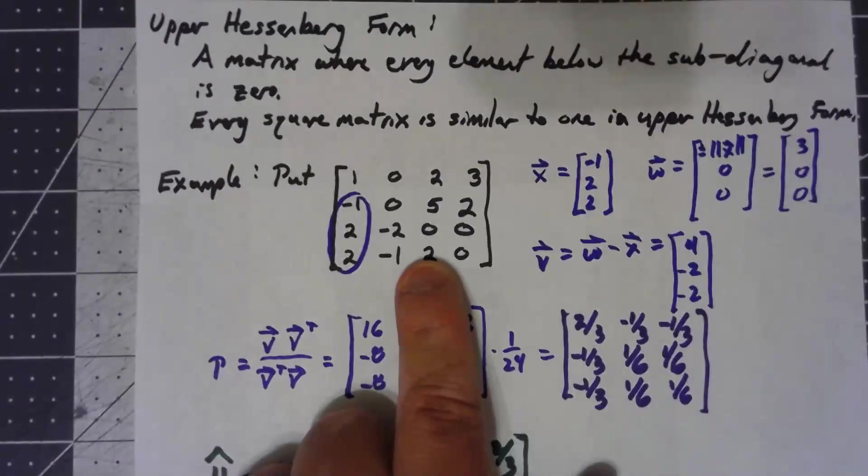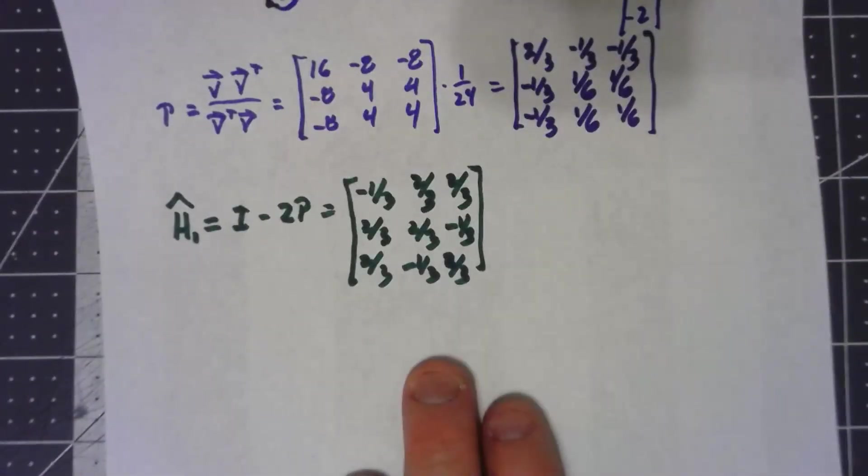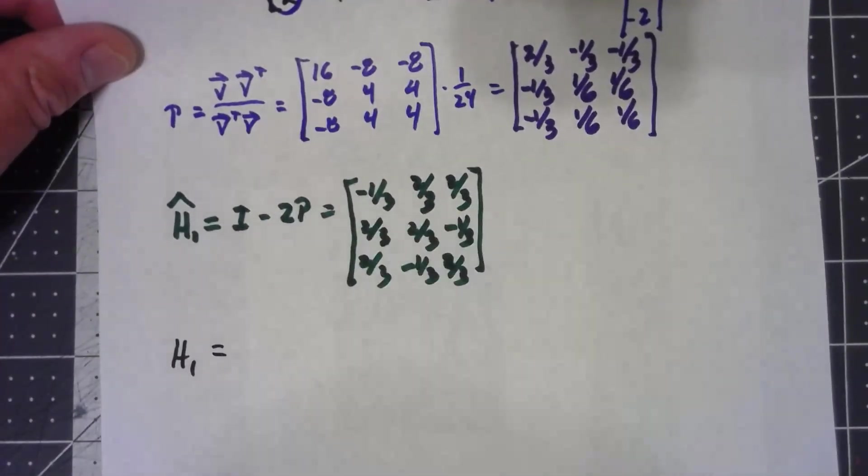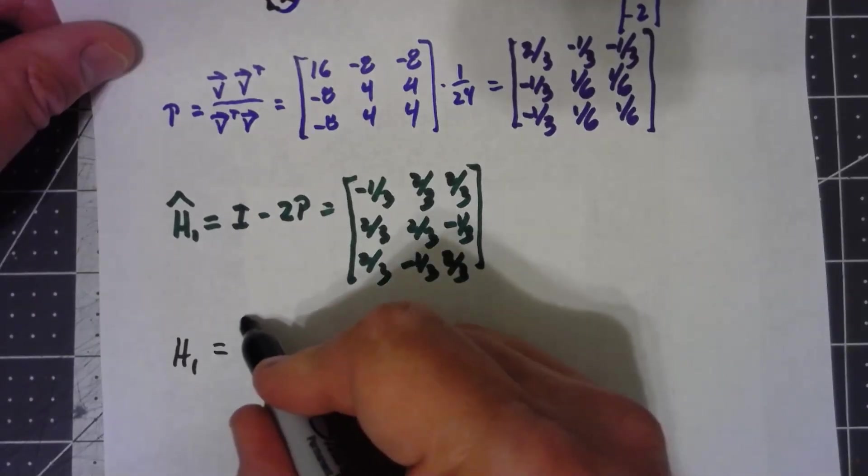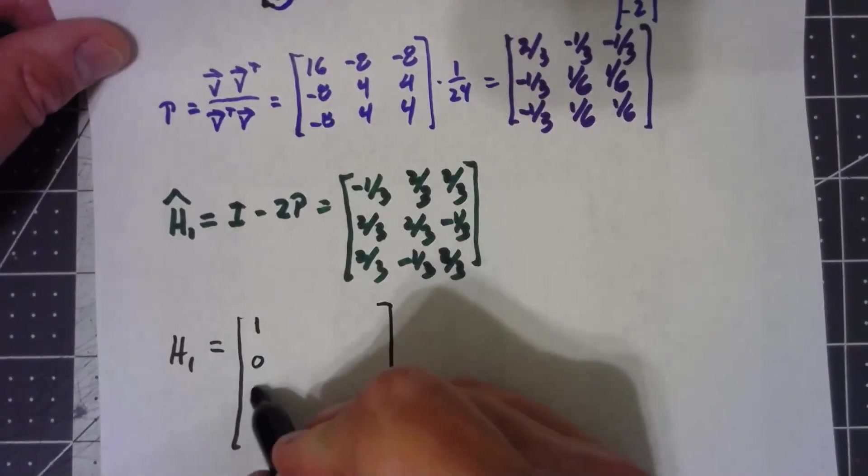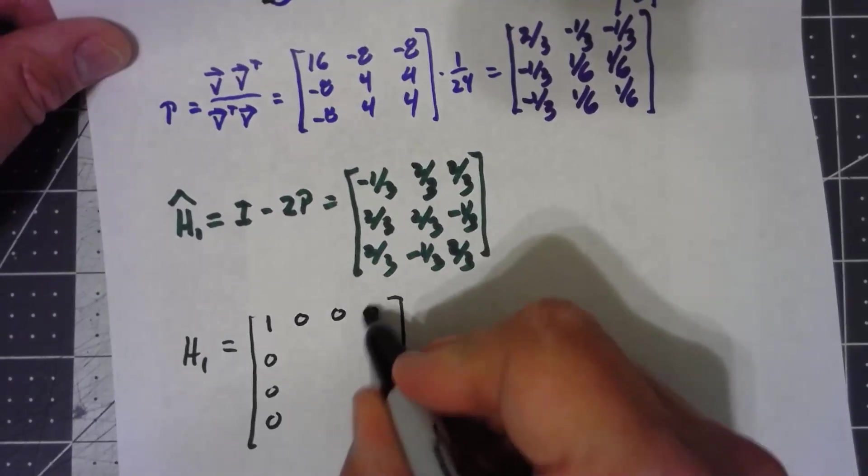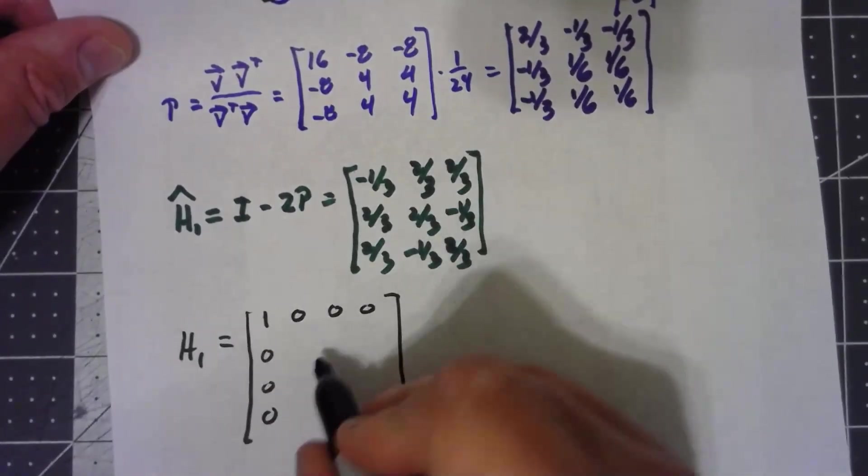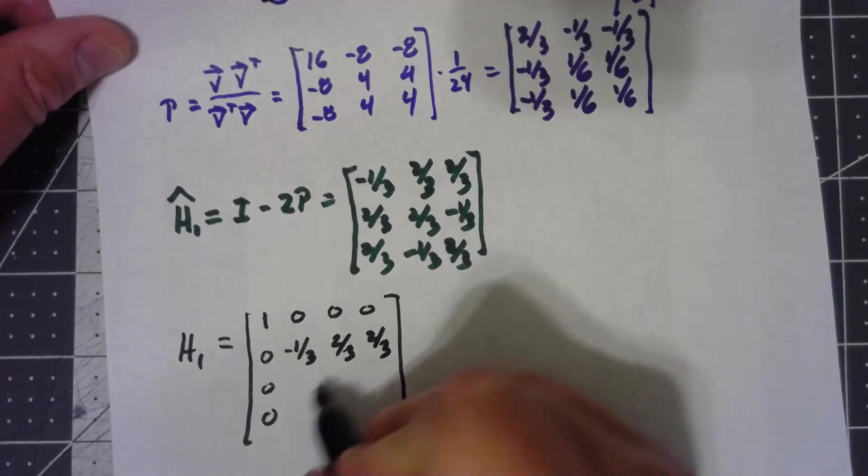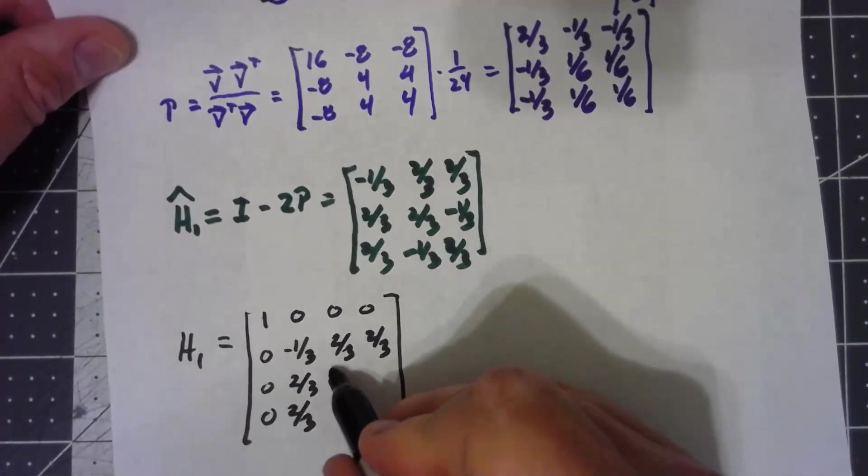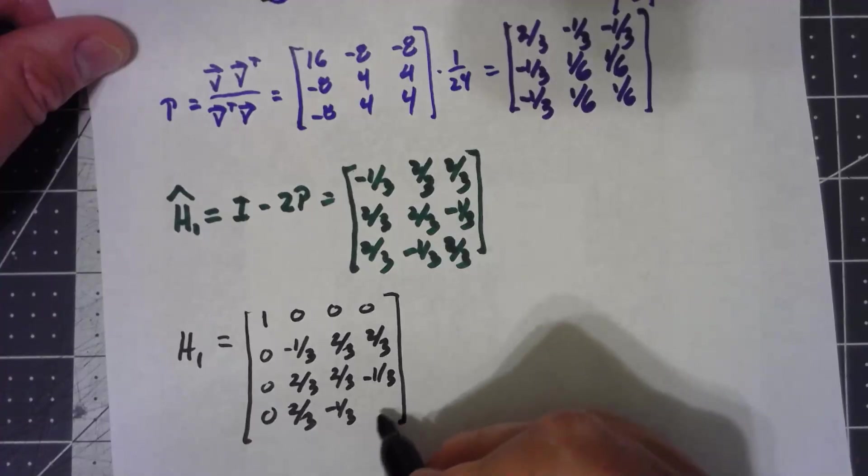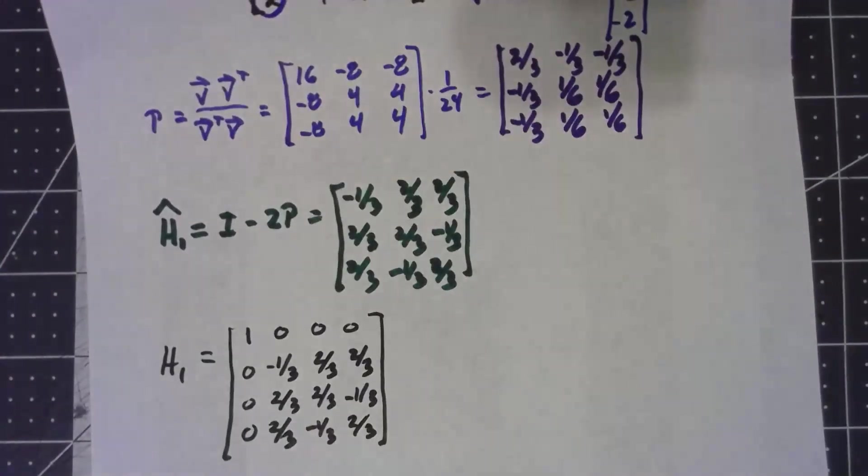Now, the only problem is my original matrix was four by four, and this thing is three by three. So my actual reflector matrix that I'm going to do, H1 without a hat, is going to be a four by four, where I'm just going to put a one in the upper left, zeros, and then this matrix down here in the bottom three by three part. It is worth noting that all those properties, this is still orthonormal, and it is still symmetric.